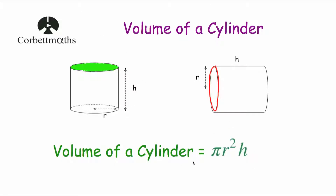So the volume of a cylinder is found by the formula pi r squared h. To find the volume, we can either use that formula straight away, or alternatively, you could find the area of the circle — the cross section — and then just multiply by how tall or how long the cylinder is. Let's have a look at our first example.